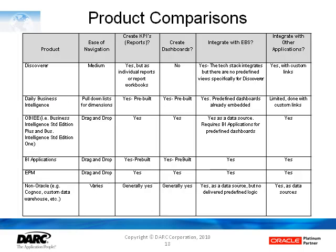This slide represents product comparisons across Oracle's various BI product offerings. If you download this presentation, you can study this matrix in more detail. It compares Discover, Daily Business Intelligence, OBIE, etc. in terms of how easy they are to use, how directly you can create new KPIs — key performance indicators — and reports with them, how difficult it is or whether they can even be used to create dashboards, how well they integrate with the EBS suite, and how well they integrate with other types of applications.